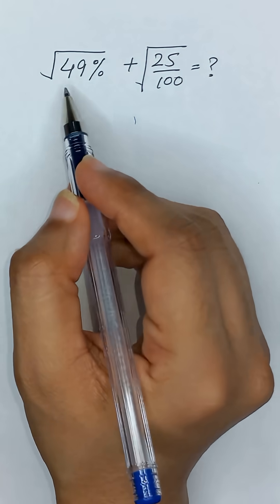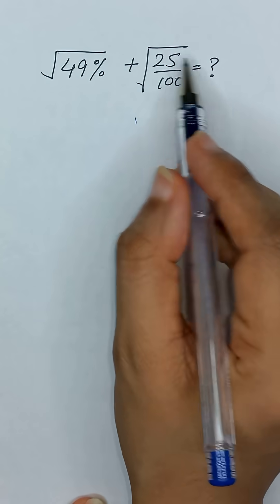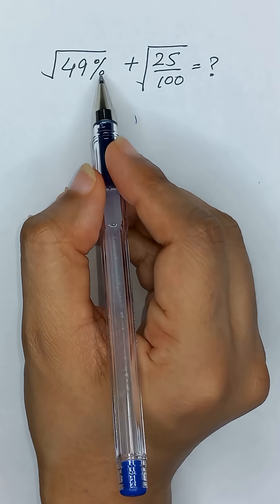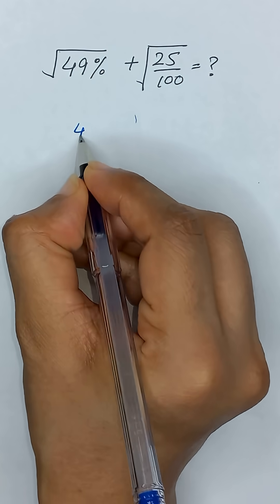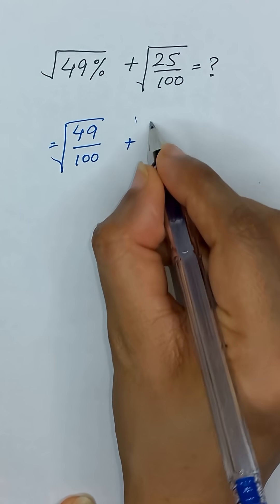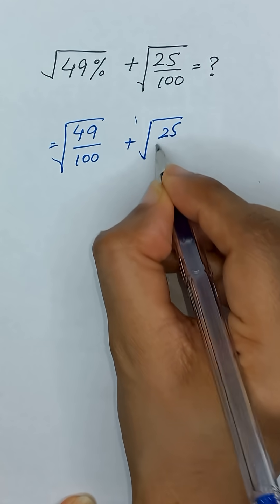What will be the value of square root of 49% plus square root of 25 divided by 100? So first of all, we will change this percent into fraction. So it will give us 49 divided by 100 and its square root plus square root of 25 divided by 100.